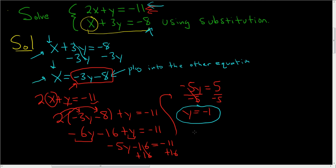So x is equal to negative 3y minus 8. So x equals negative 3 times negative 1 minus 8. So x is 3 minus 8, which is negative 5.